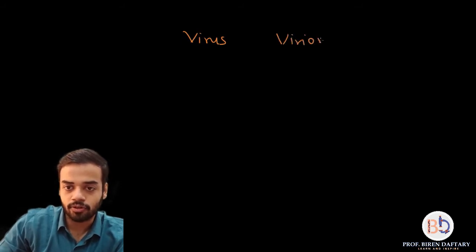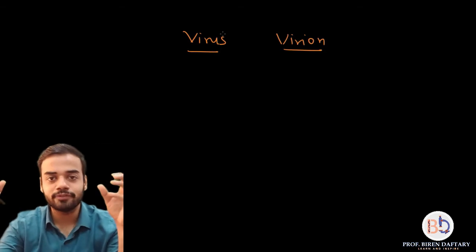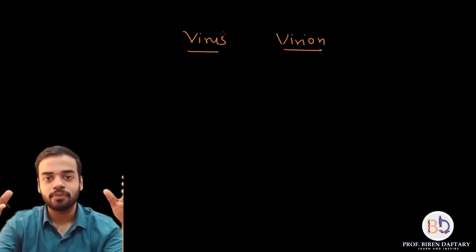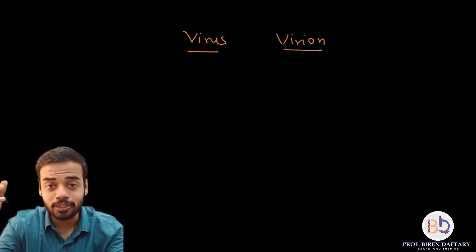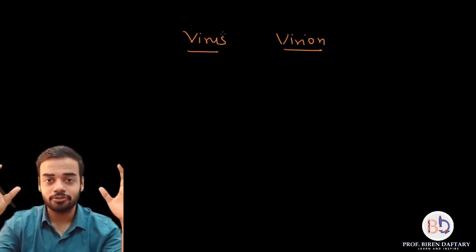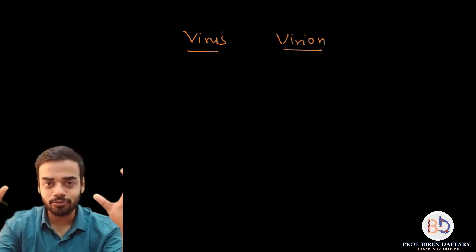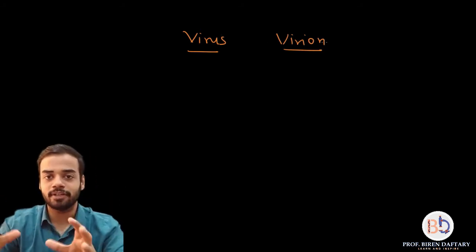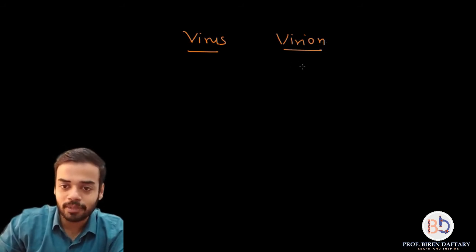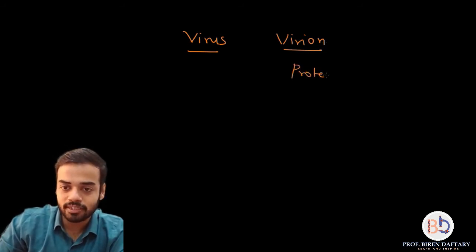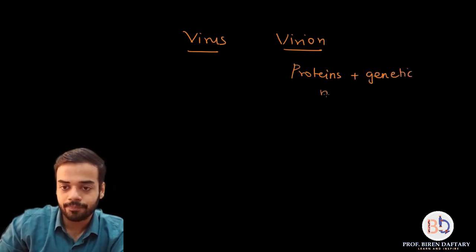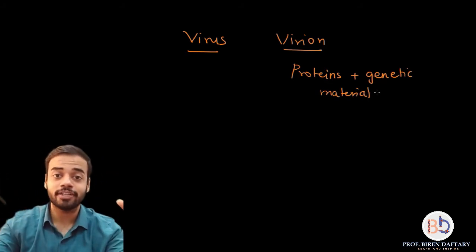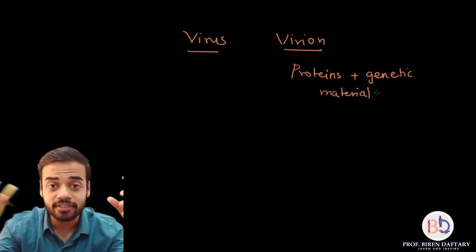These two words get confused a lot — many people interchange them or only use the word 'virus.' So let's get down to the basics. A virion is basically a complete virus, having proteins plus genetic material. A virion is a virus which has not yet infected the cell; it is outside the cell.